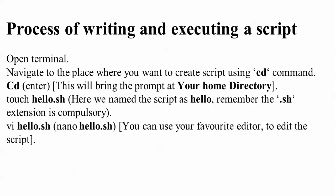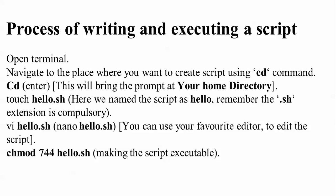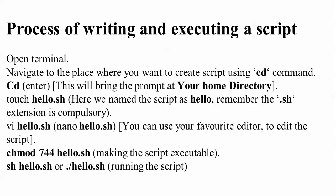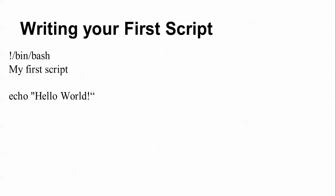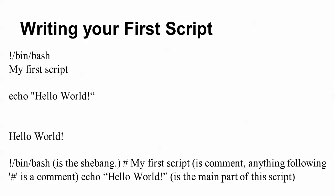To make the script executable, give permission using chmod 744 hello.sh. To run the script, use 'sh hello.sh' or './hello.sh'. For the first script, remember that #!/bin/bash is the shebang line at the top. Anything following a hash (#) is a comment. The main command is 'echo hello world', and the output will be 'hello world'.